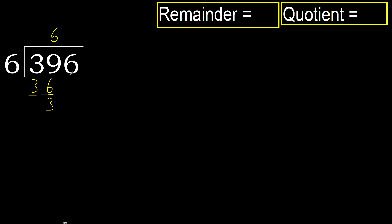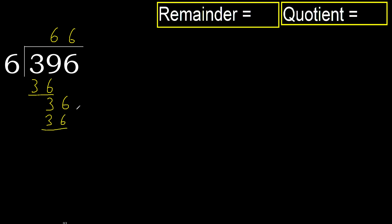Next, bring down 36. 6 multiplied by 6 is 36, which is not greater. Subtract: result is 0.